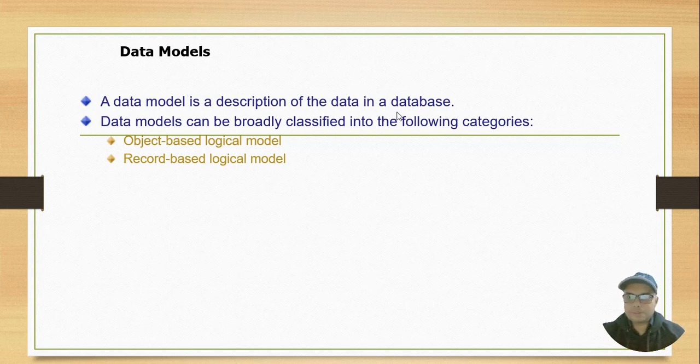A data model is a description of data in a database. Data models can be broadly classified into the following categories: object-based logical model and record-based logical model.